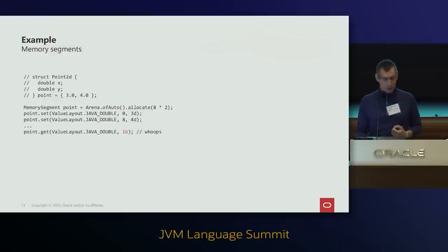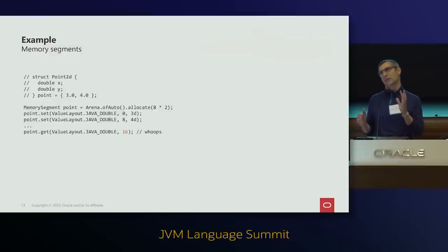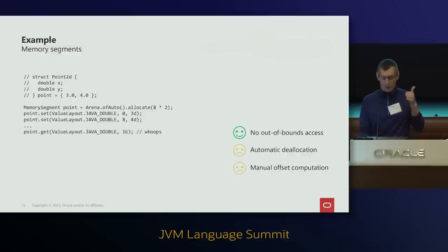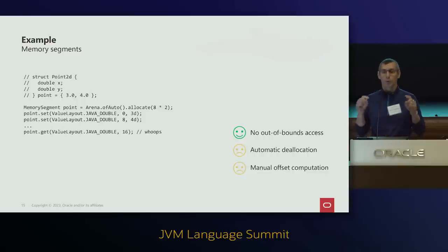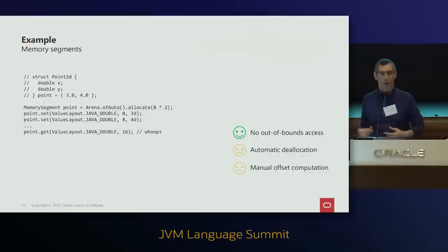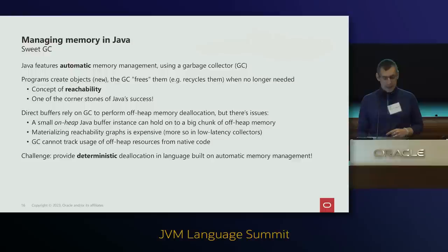We still have some issues inherited from the ByteBuffer API: we're relying on the garbage collector to deallocate memory, and we need to compute all offsets manually. For example, if our point2D struct changes to have three fields or a field type changes, all our offsets will be wrong. Let's see how we can add deterministic deallocation to the API.